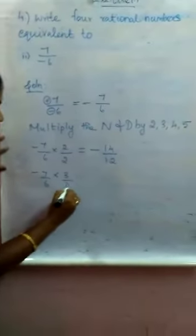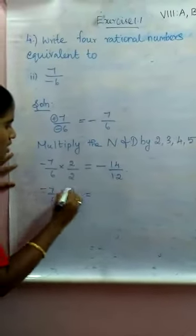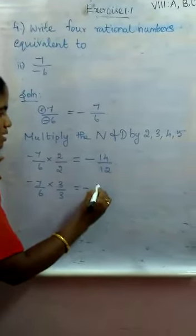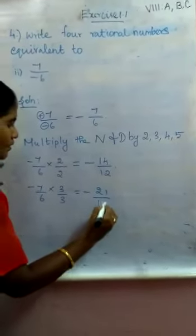Next, which number are we going to do? 3 by 3. 7, 3's are 21. Minus 21 by 24.